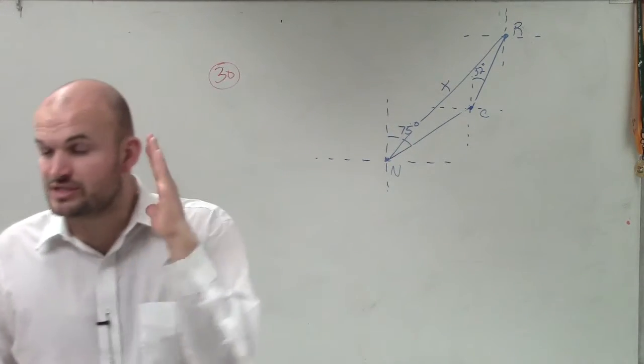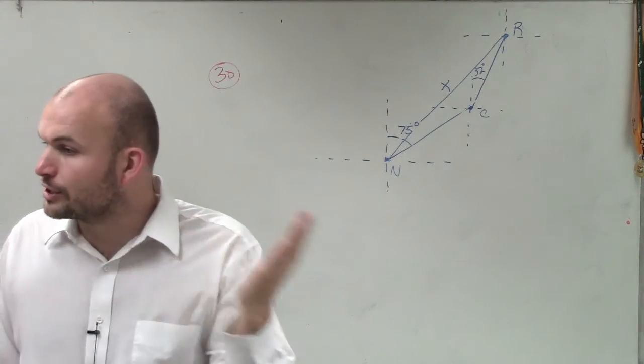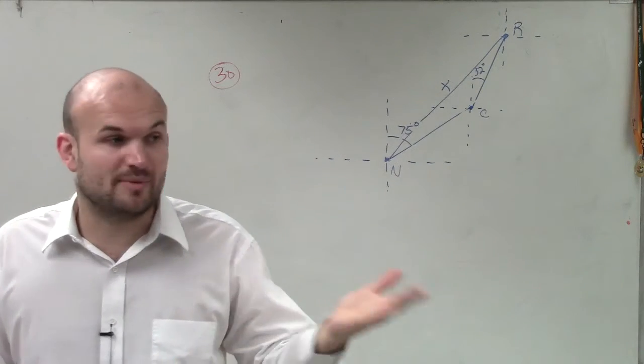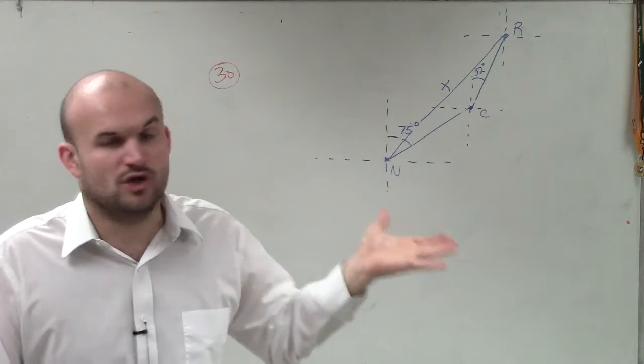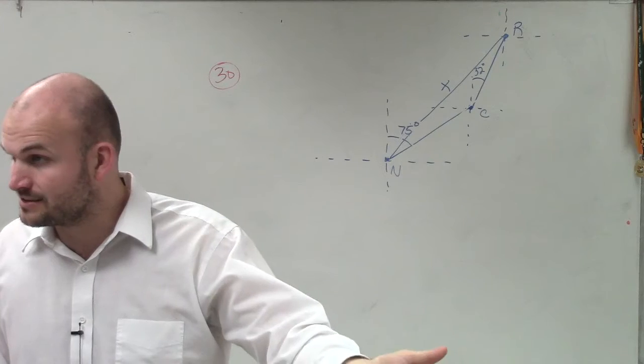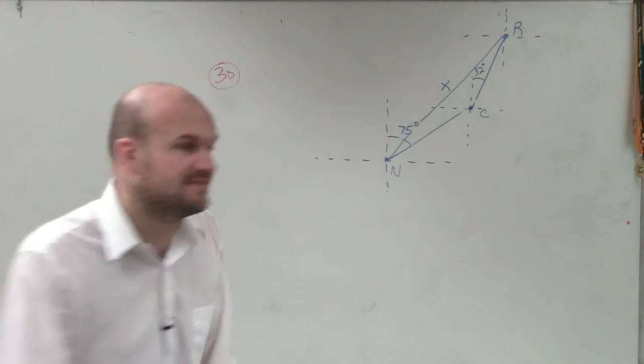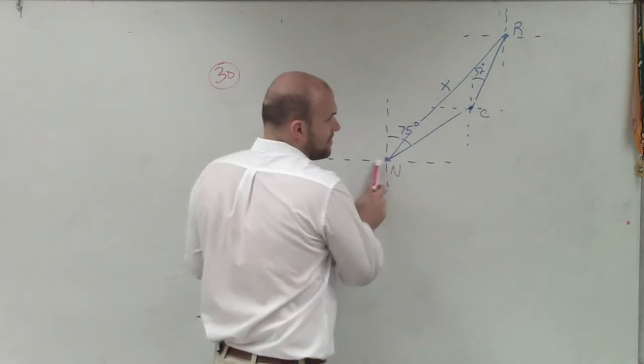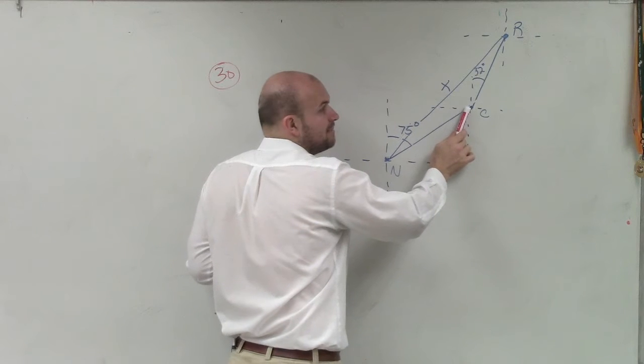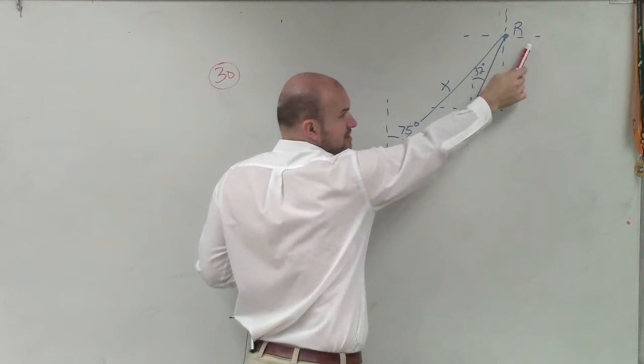So remember when we're dealing with our bearings, we're going to be starting looking north and going clockwise to what our bearing is. So it's a little bit different than me saying go north 75 degrees east. I'm just giving you the bearing of 75, which is how we got to here. Then we went to Claremont. Then it said at a bearing of 32 was Rosewood or something up to here.